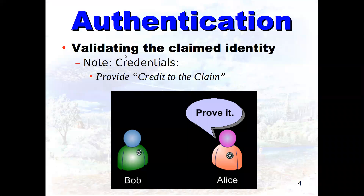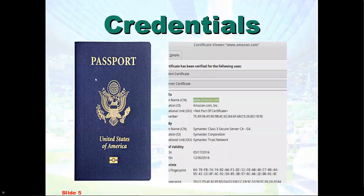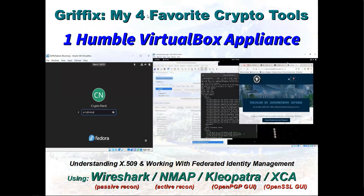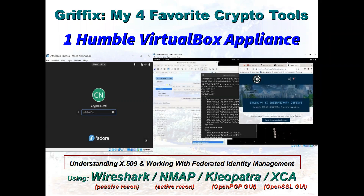These X.509 certificates are the credentials we use — when Bob says he's Bobby, he needs to prove it, like a driver's license or a passport. That's what certificates are. When you're architecting solutions, don't just prove who you are. It's nice to prove who you are to the ATM, but it would also be nice to know that that was your ATM and not a skimmer. My little appliance here has four tools to help you understand X.509 and federated identity.